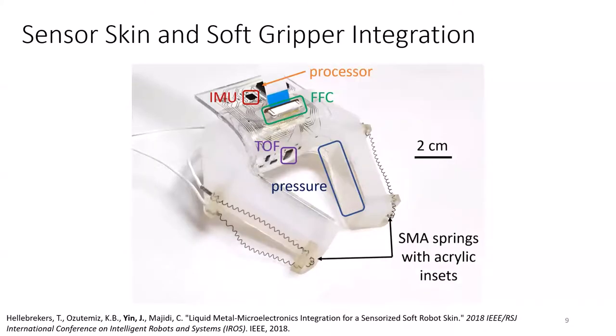This figure shows the sensor skin integrated with the soft gripper, which is made of Dragon Skin 30. The sensor skin is cut to the appropriate shape and adhered to the soft gripper using silicone epoxy. And when adhered, the sensors are in relevant locations. For example, the pressure sensors are located on the inner fingertips of the gripper and the time-of-flight is located in the palm of the gripper. More details on the gripper design and further characterization of this soft gripper and sensor skin can be found in the 2018 IROS paper.